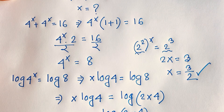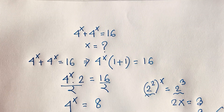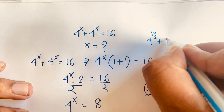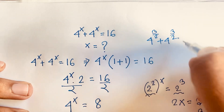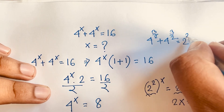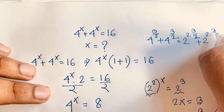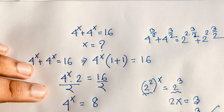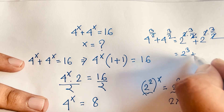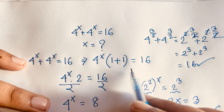Let's verify by checking our original equation: 4 to the power x plus 4 to the power x equals 16, with x equal to 3/2. So 4 to the power 3/2 plus 4 to the power 3/2. Writing 4 as 2 squared: (2 squared) to the power 3/2 plus (2 squared) to the power 3/2 equals 2 to the power 3 plus 2 to the power 3, which is 8 plus 8, equals 16.